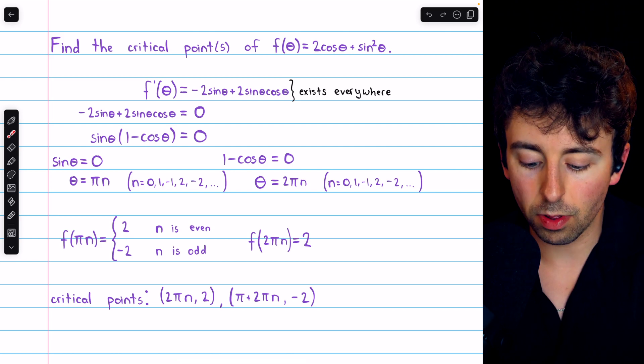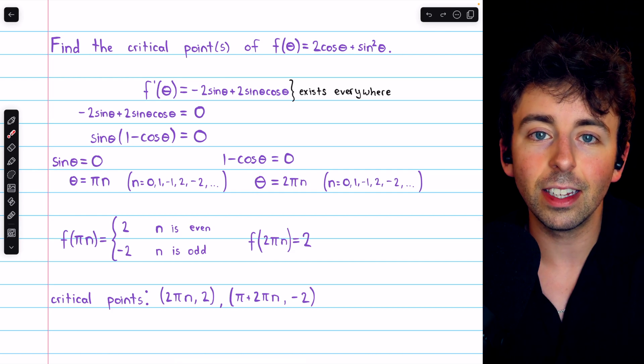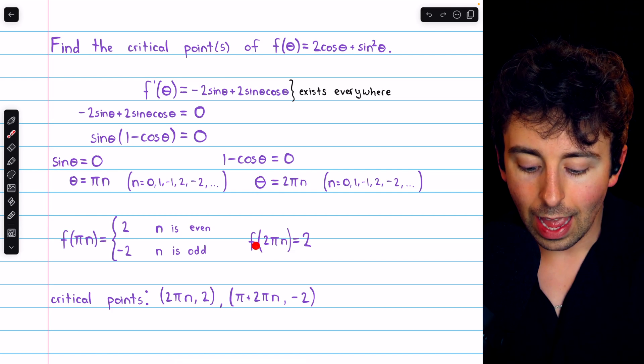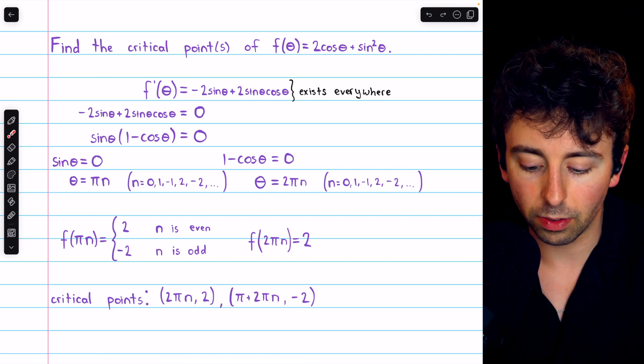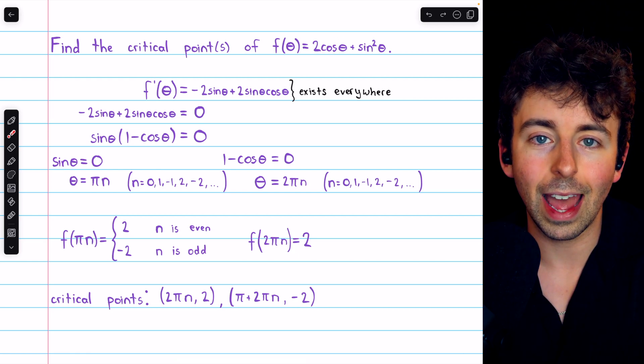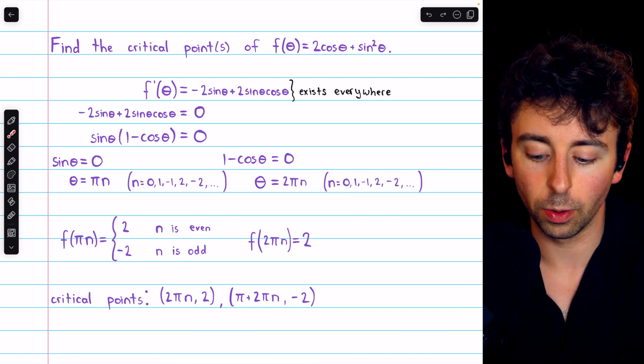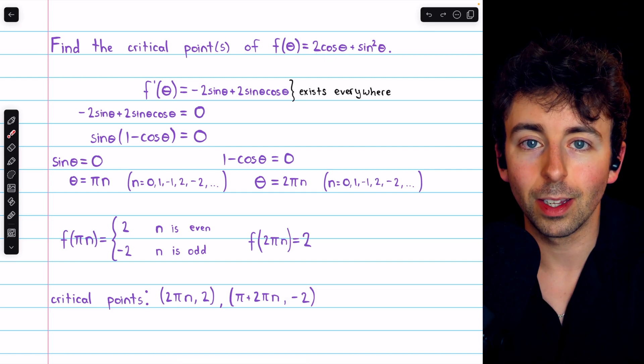But then we also have to consider the other critical numbers. 1 - cos(θ) is equal to 0 whenever θ = 2πn. f(2πn), it turns out, is just equal to 2, because cos(2πn) for any integer n is going to be positive 1. So this would just be 2, and the sine term would just be 0.